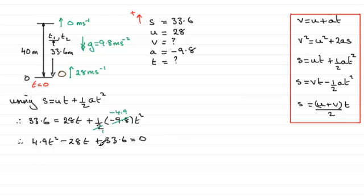Now I kind of sense that this is going to be a quadratic equation that will factorise fairly well. Now you could use the quadratic formula at this point. You could say that T equals minus B plus or minus the square root of B squared minus 4AC all over 2A, where A is the 4.9, B is the minus 28 and C is 33.6. But I do suspect that this will factorise.